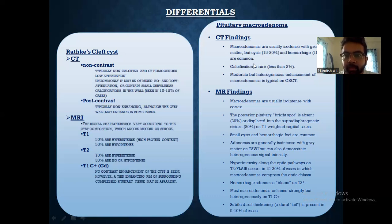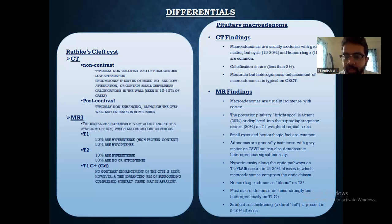The second differential is pituitary macroadenoma. On CT, macroadenomas are usually isodense with gray matter, but cysts and hemorrhage might be seen. Calcifications are rare, and moderate but heterogeneous enhancement is typical. On MRI, macroadenomas are usually isointense with cortex. The posterior pituitary bright spot is absent or displaced. Small cysts and hemorrhage are commonly seen. Adenomas are generally isointense with gray matter on T2. Hyperintensity along optic pathways on T2 occurs in 15-20% of cases. Hemorrhagic adenomas bloom on susceptibility-weighted imaging. Most adenomas enhance strongly but heterogeneously on contrast. Dural thickening is present in 5-10% of cases.